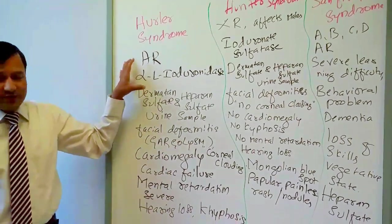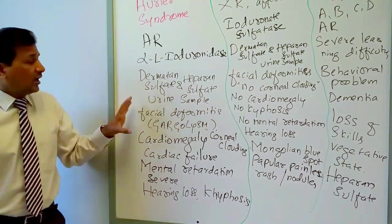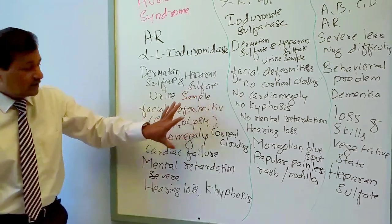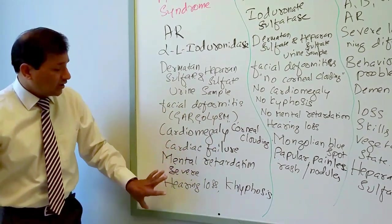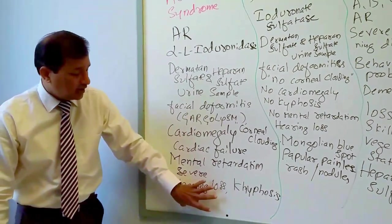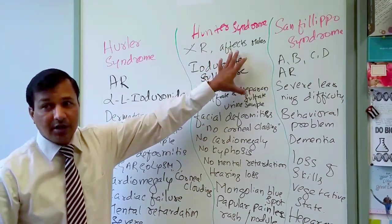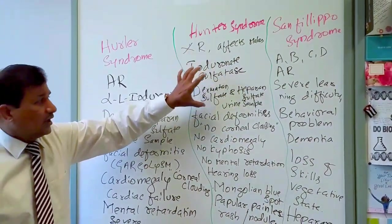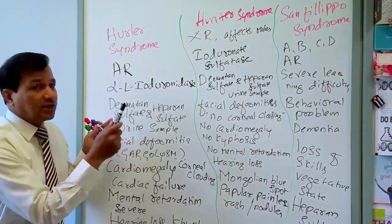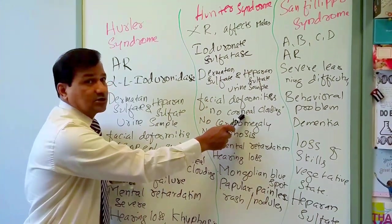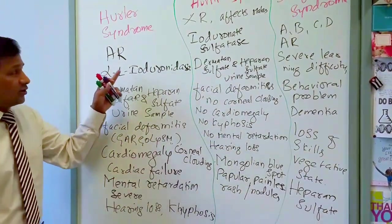In Hurler syndrome, heparan sulfate and dermatan sulfate are elevated in urine. Classified under facial deformities, patients have cardiomegaly — cardiac failure is the cause of death — corneal clouding, severe mental retardation, hearing loss, and kyphosis with acute angle gibbus. Hunter syndrome is X-linked recessive, affects males, iduronate sulfatase deficiency, dermatan and heparan sulfates elevated; belongs to facial deformities category but patients do NOT have corneal clouding, cardiomegaly, kyphosis, or mental retardation.